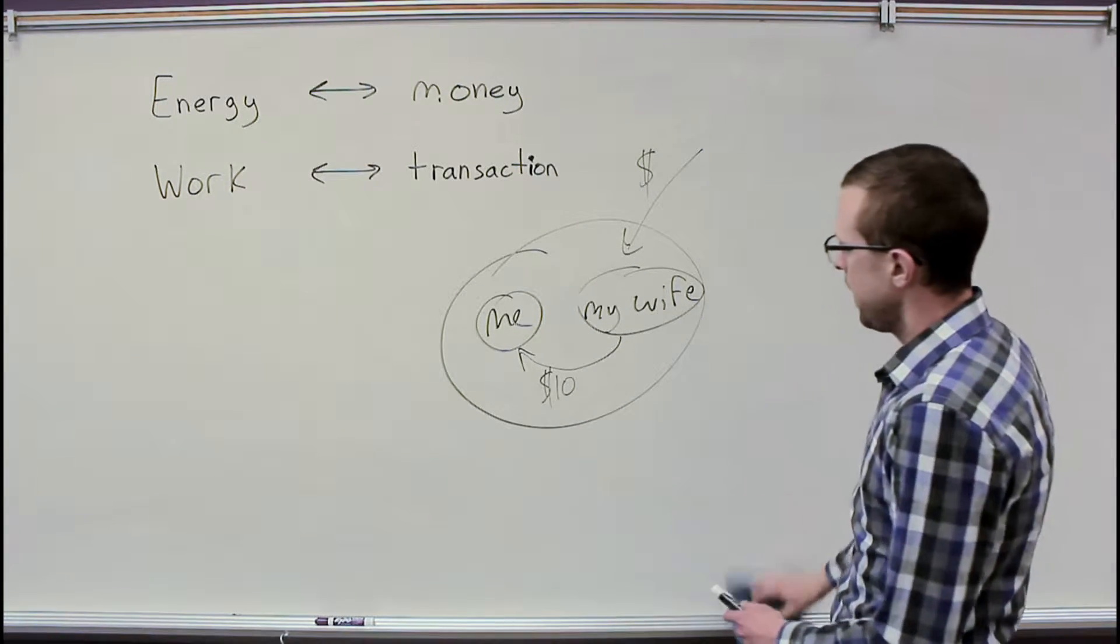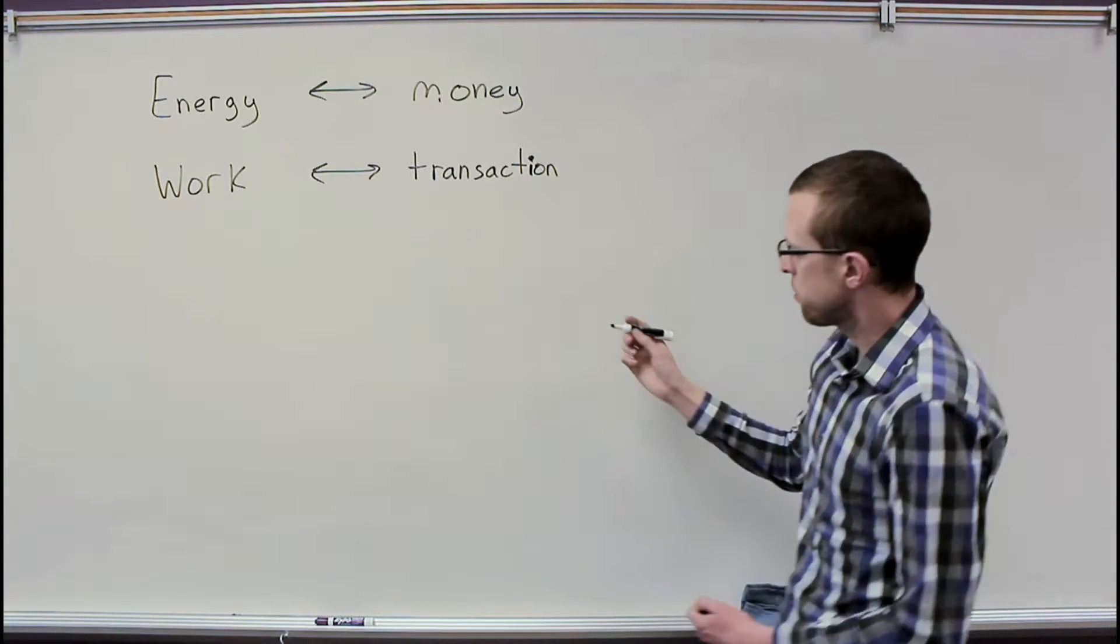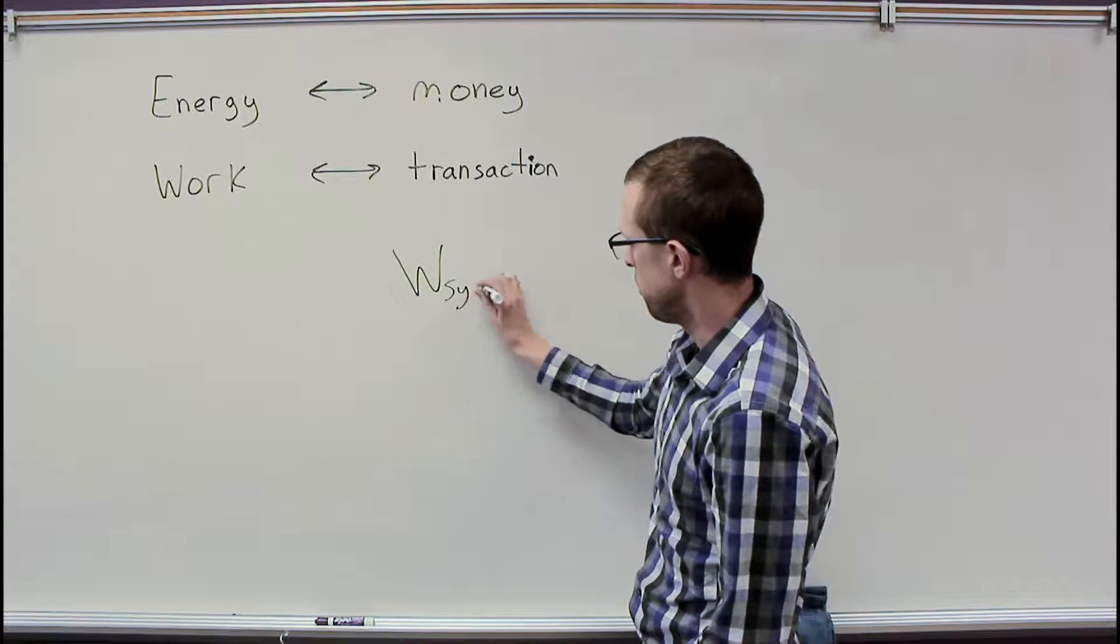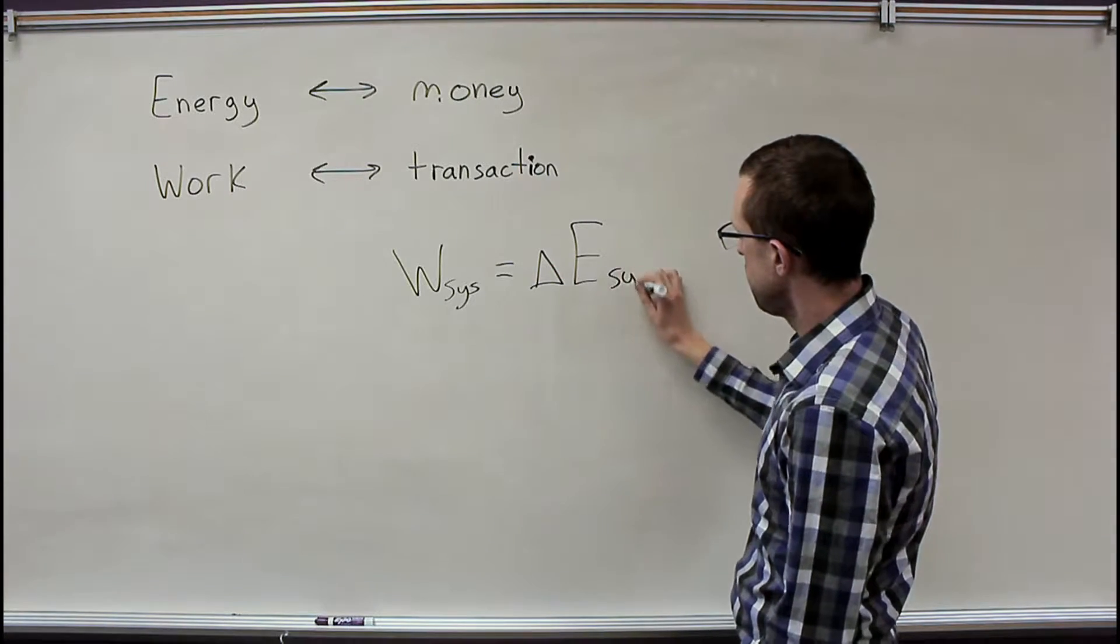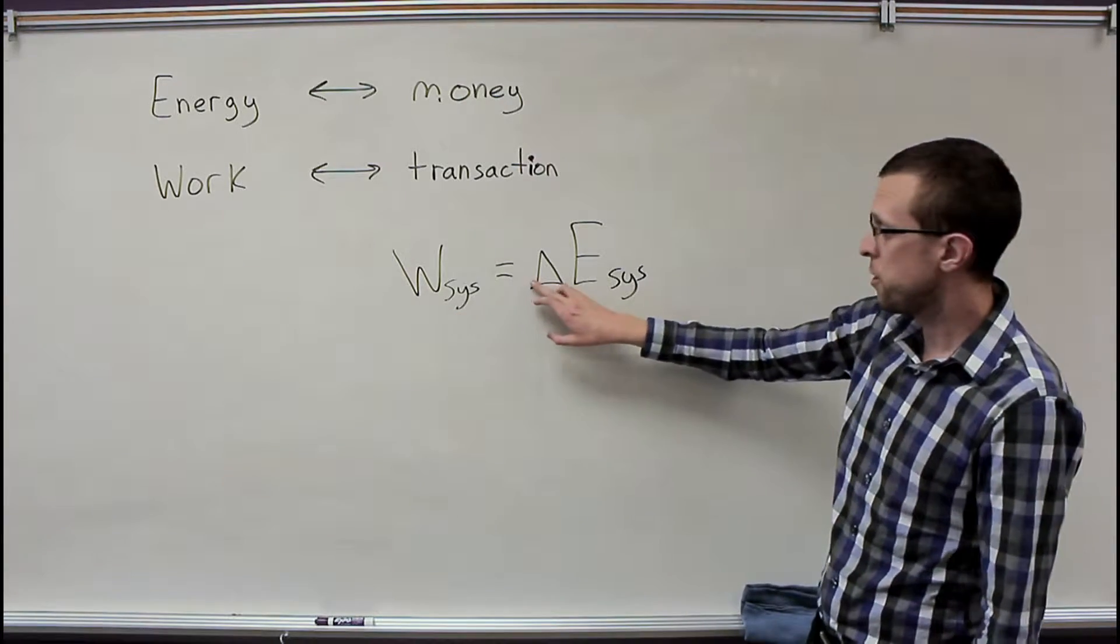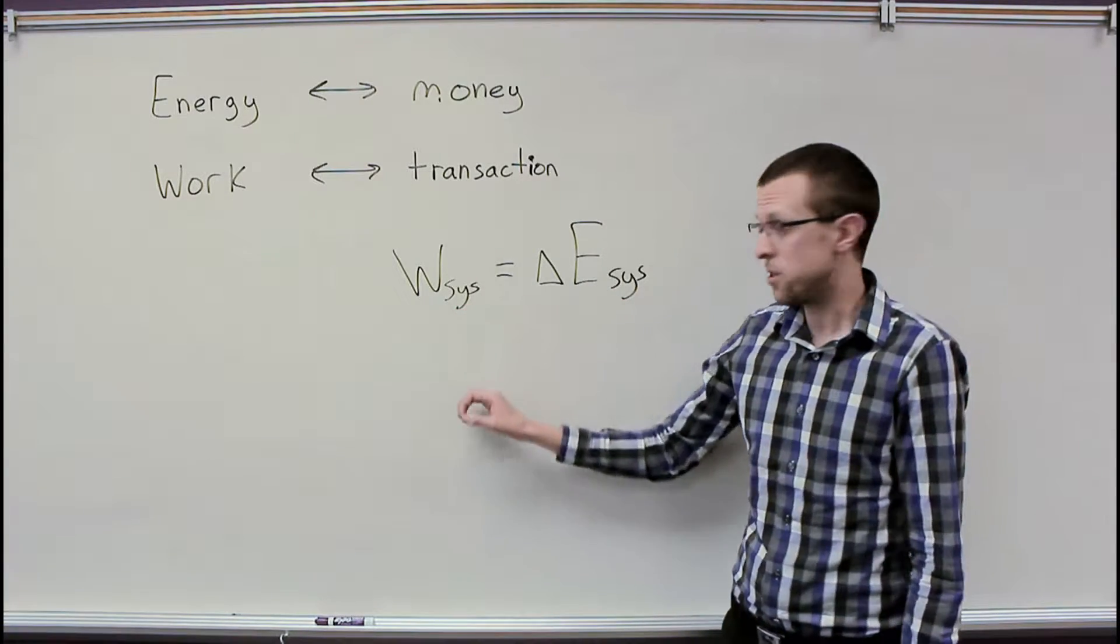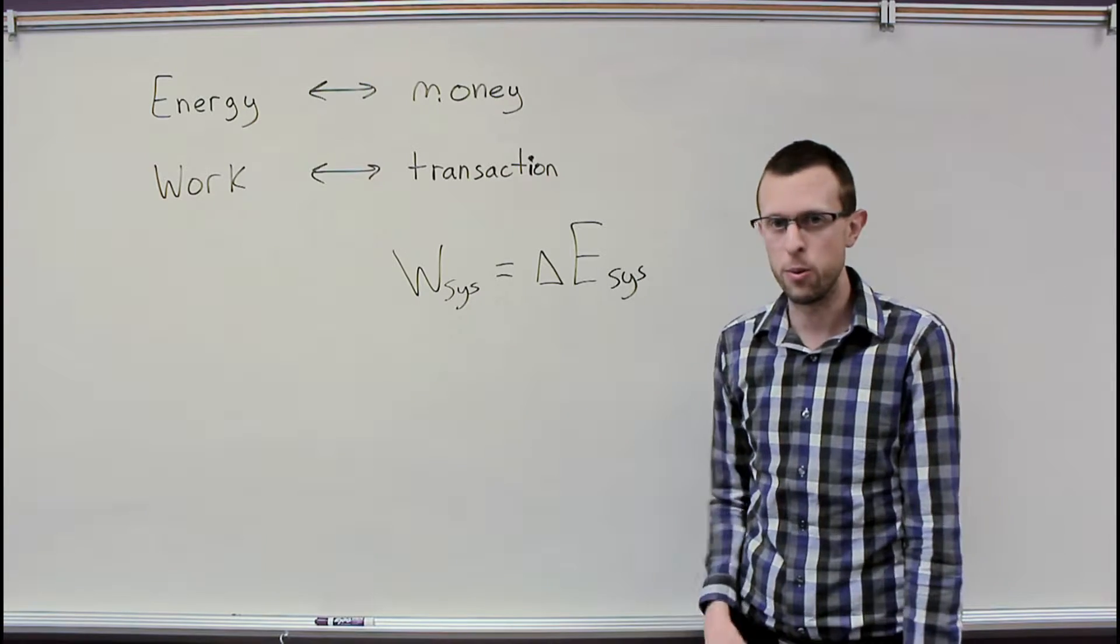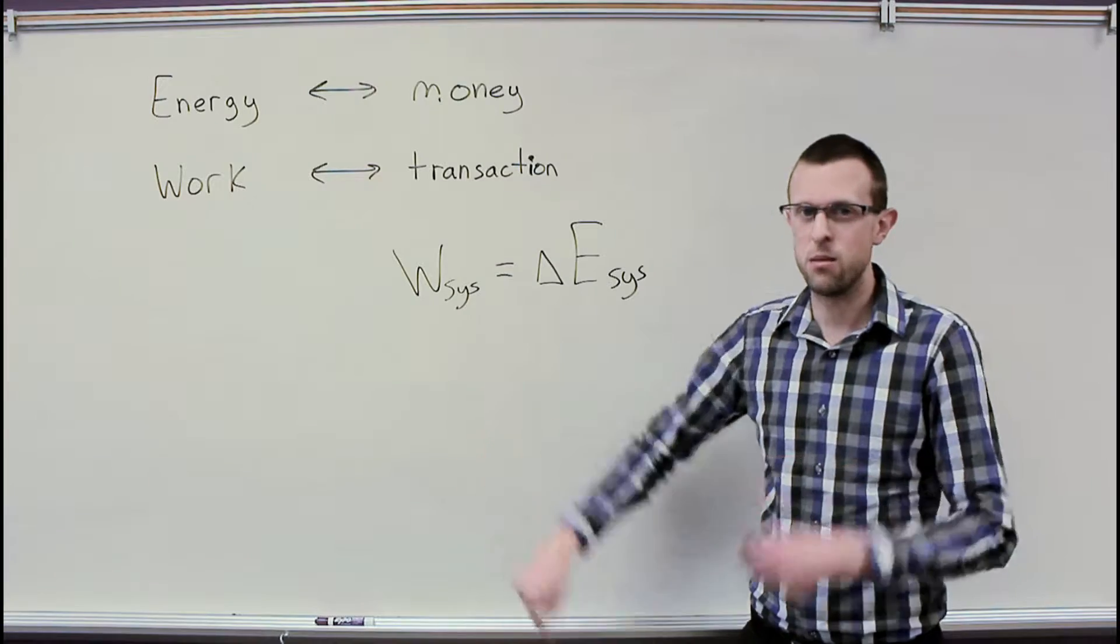Now, we can write that as an equation. We can say that the amount of work done on some system is equal to the change in energy. So, remember, work is like the transaction amount. Delta just means the change in something, and here we're talking about energy. So, the work done on our system by outside influences, by outside forces, when we're talking about work, is equal to how much the energy for that same system changes.